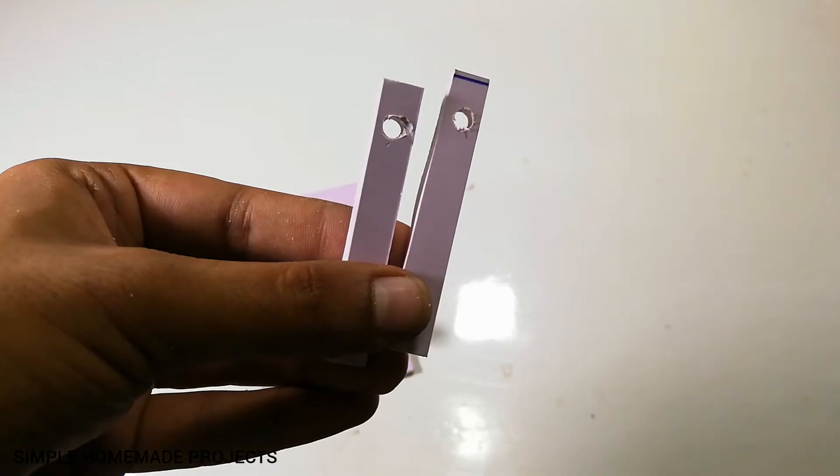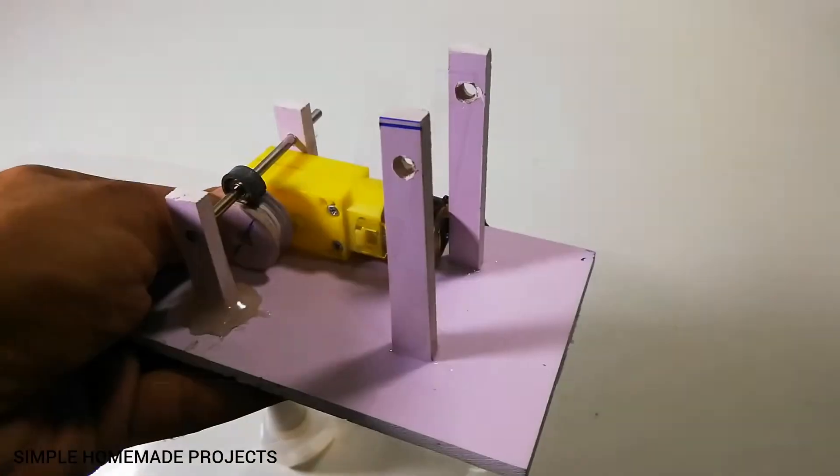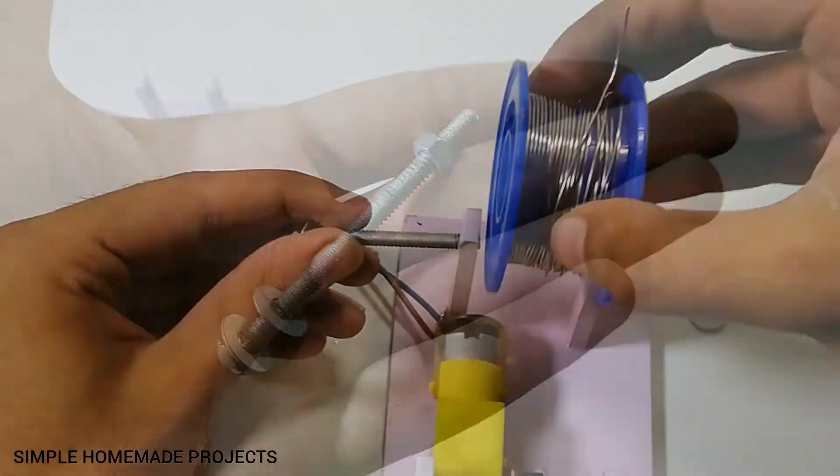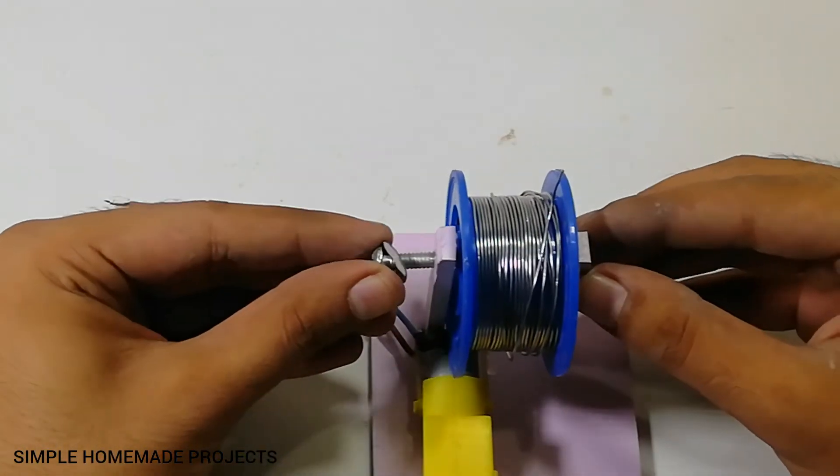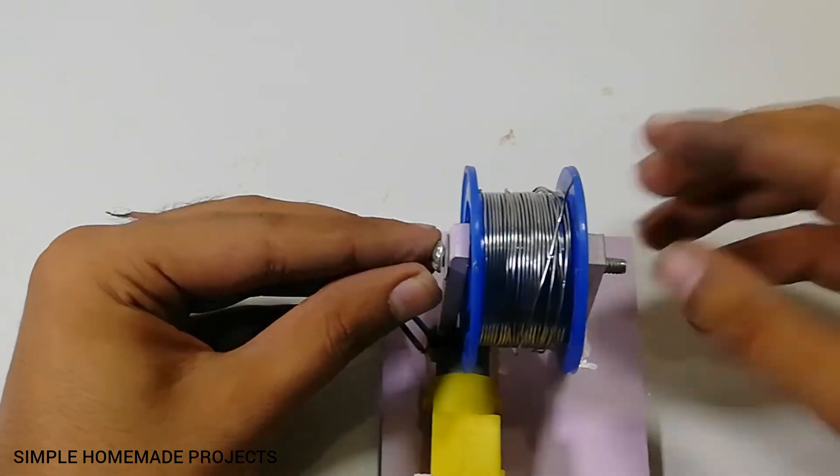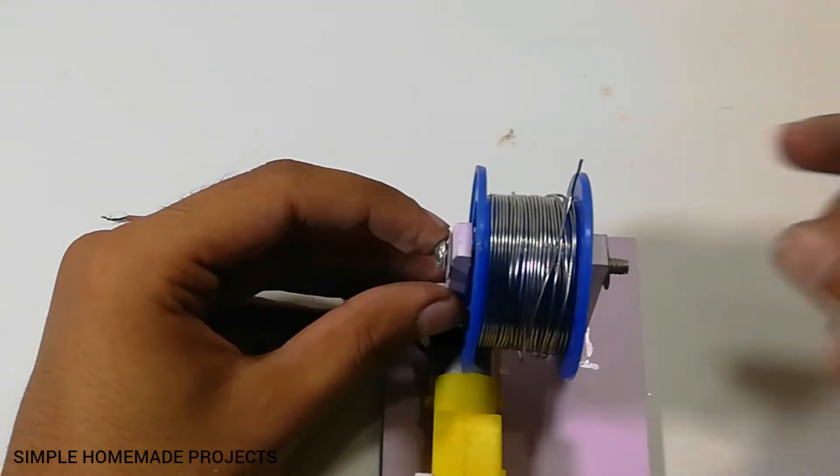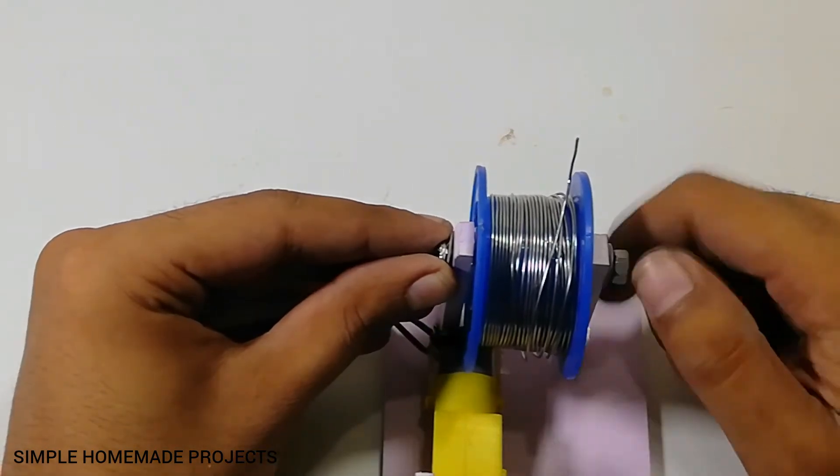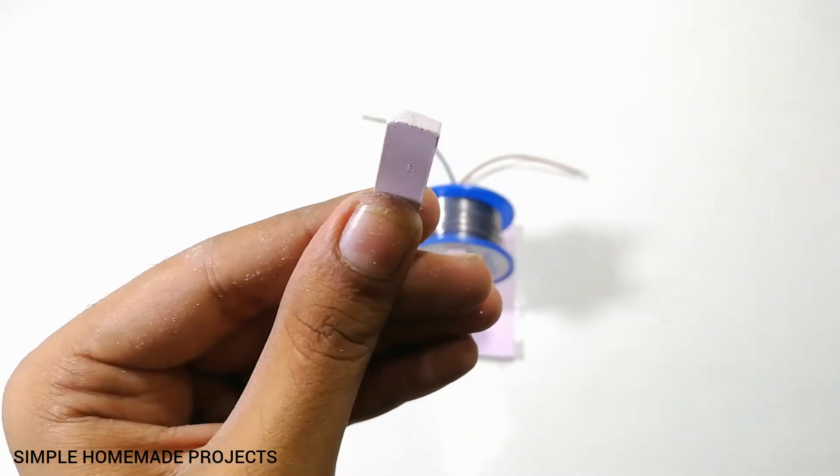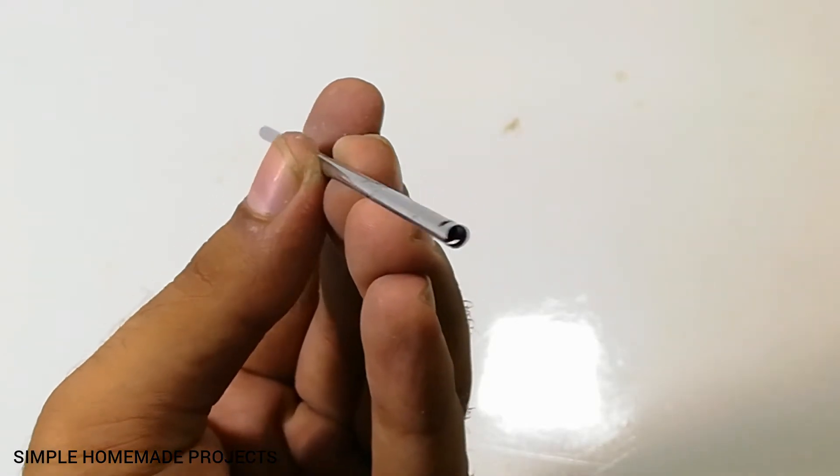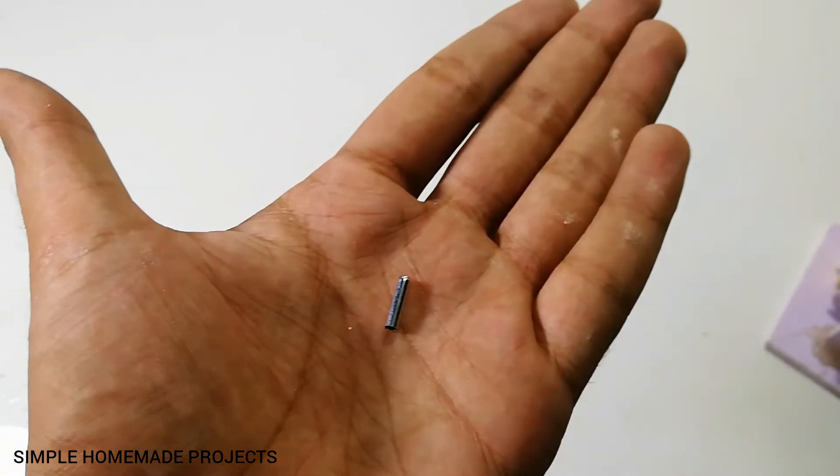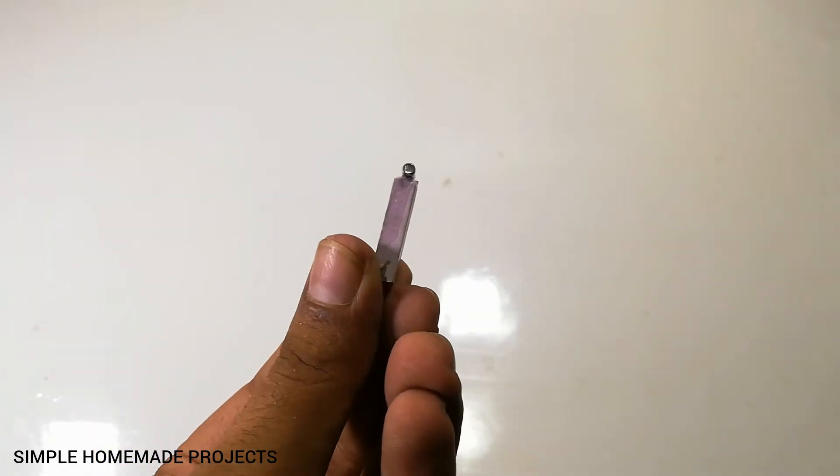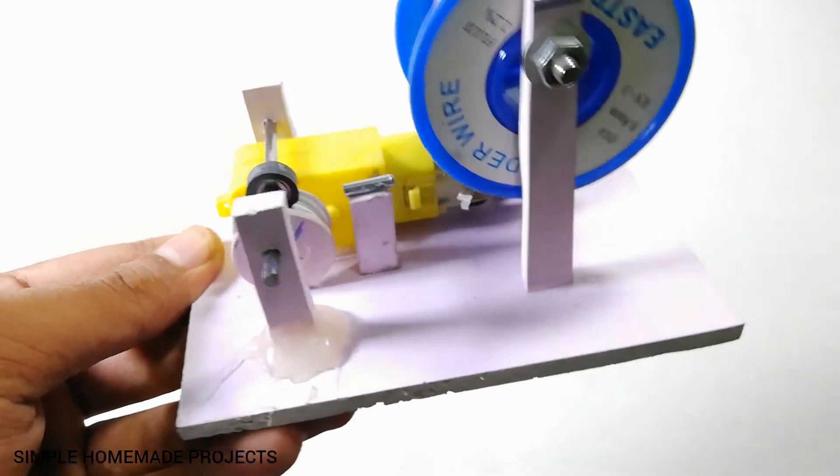Now cut two bigger strips, again drill the holes, and insert the solder coil. Secure it using a nut and a bolt. Take a small piece of metal tube and fix it on top of the PVC board piece. Secure it on the base plate using some glue.